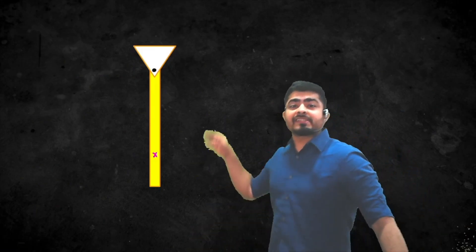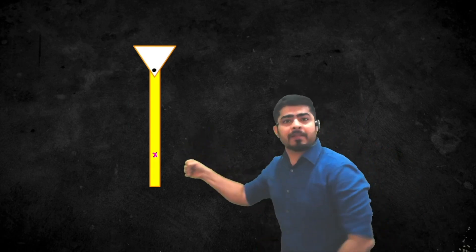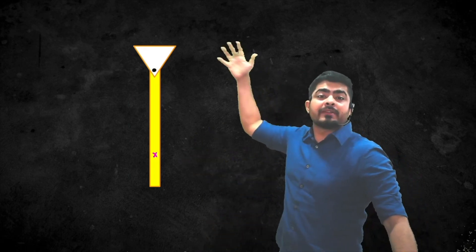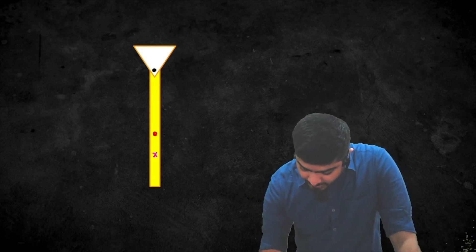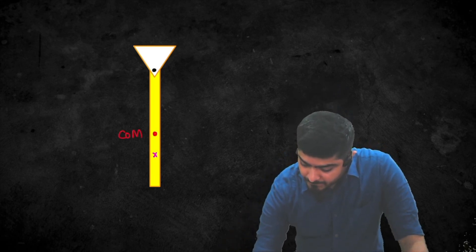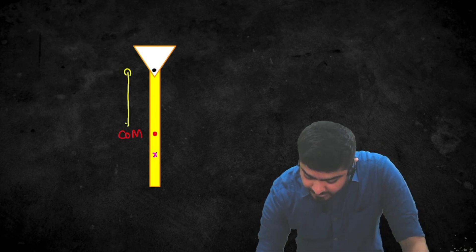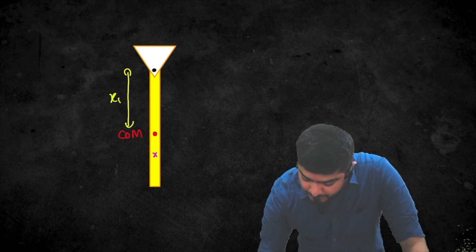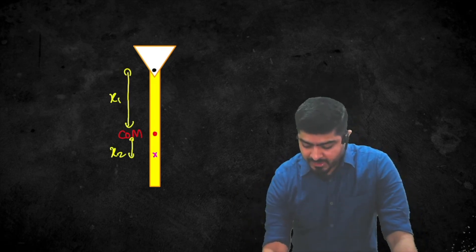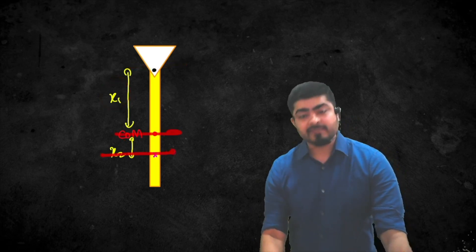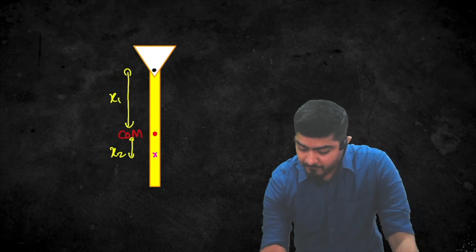Here we have a rod which is hinged from the top — it can oscillate freely about that hinge. I have marked the point on the rod where, if I apply a force, there will be no force experienced by the hinge. If I'm hitting at this point, there will be no force on the hinge — this point is called the sweet spot. The distance between the hinge and the center of mass is x1, and the distance between the center of mass and the sweet spot is x2.